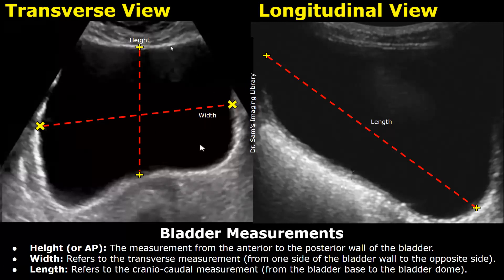After locating the bladder in a transverse plane, you can measure its height and width. To measure the height, or the anterior-posterior measurement, place one caliper at the anterior wall of the bladder and the second caliper at its posterior wall, and you will get the height.